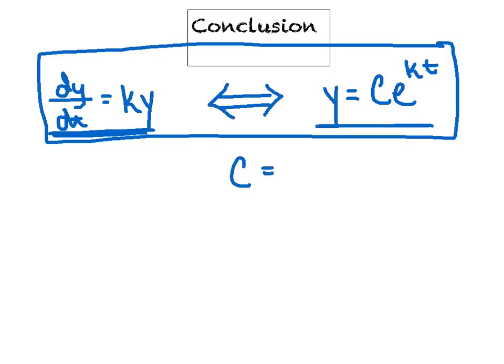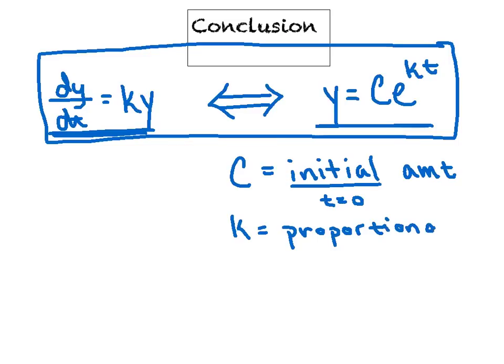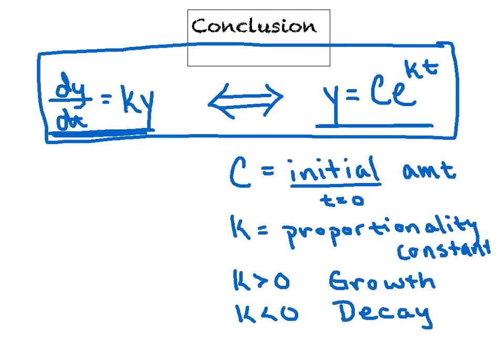A couple of the key components here: the C is equivalent to your initial amount every time. We can prove that's always true because when we say initial, we're referring to the fact that T equals 0. If you substitute that 0 in for T up there, E to the 0 power is 1 and you'll just end up with Y equals C. Now K is kind of the fancy rascal here. We call that your constant of proportionality. If K is greater than 0, it turns into a growth type of model. Whereas if K is negative or less than 0, then it becomes a decaying model.